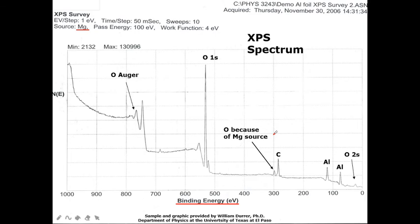Let us look at an example of aluminum foil. A magnesium X-ray source is used, with a work function of 4 eV, on an aluminum surface. We are trying to understand the 1s electron of this system. The sharp peaks represent the XPS spectrum, showing the binding energy required to remove the electron. The broader peaks are the auger electrons being ejected. So XPS spectra always have sharper peaks and auger spectra have broader peaks.